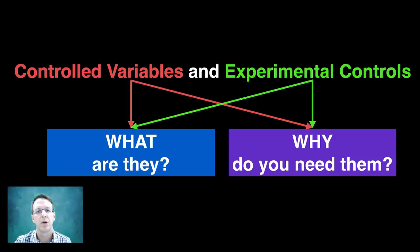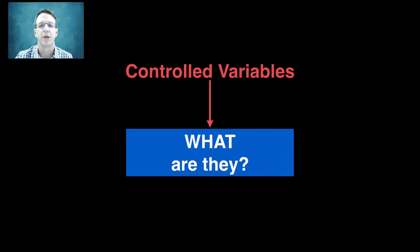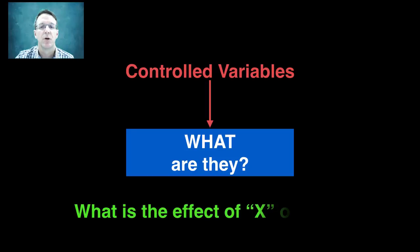So let's deal with the controlled variables first. But before we can talk about those, we need to quickly define what the independent and dependent variables are. So when we set up a basic experiment, we're often asking a question like, what is the effect of X on Y?